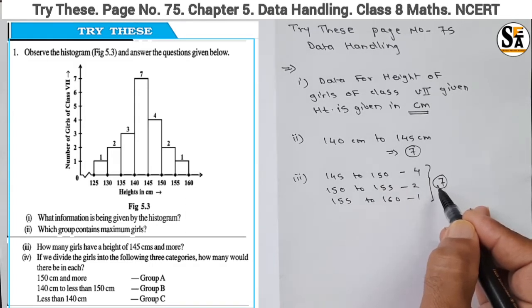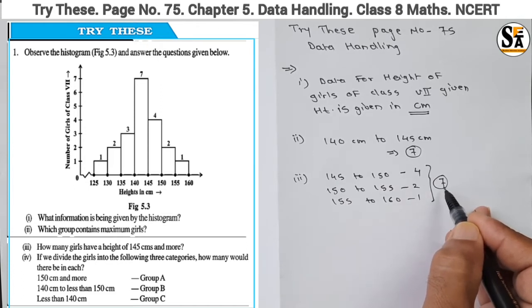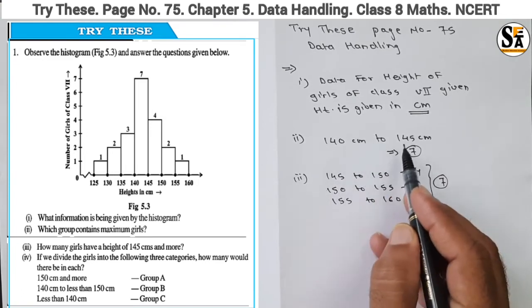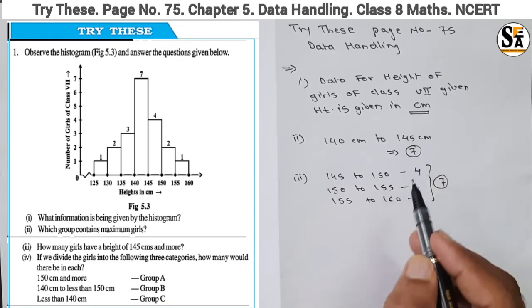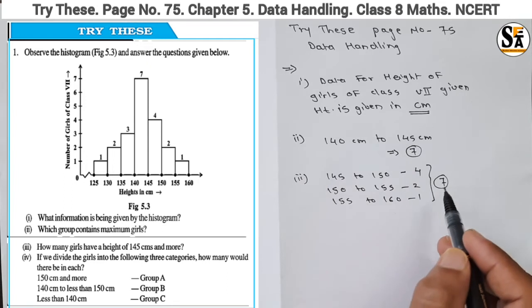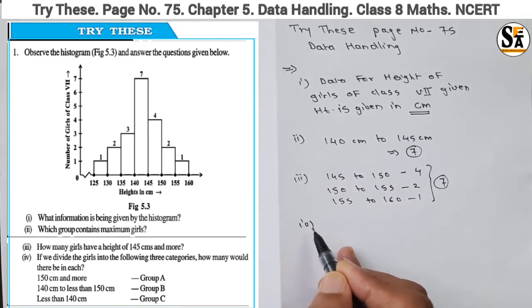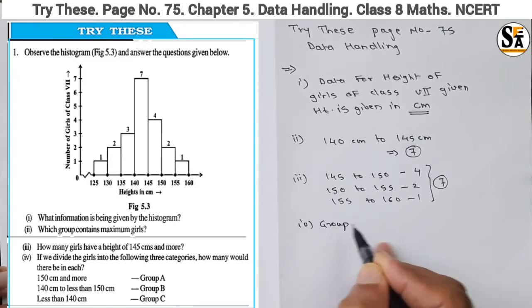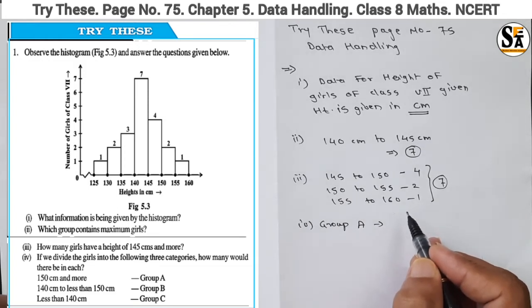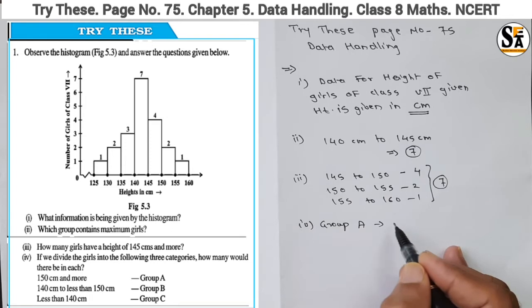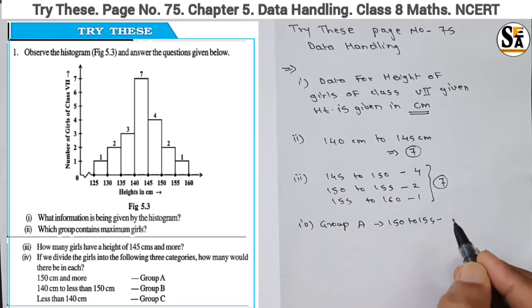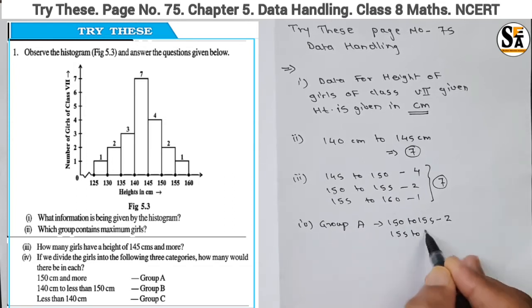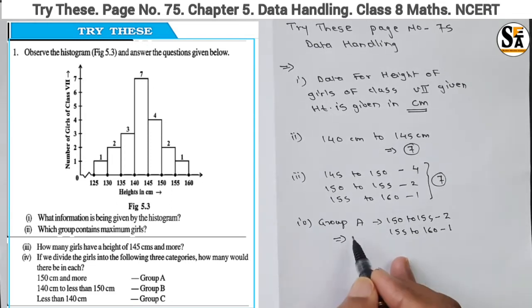So 7 girls have a height of 145 centimeters or more. Note that in the group 140 to 145 centimeters there are also 7 girls. Now for the fourth question, we divide the girls into three categories. Group A is 150 centimeters and more. Observing the histogram, from 150 to 155 there are 2 girls, and from 155 to 160 there is 1 girl. Total for Group A: 3 girls.